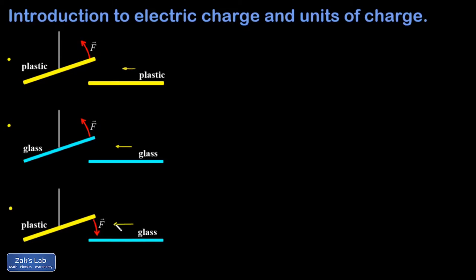So how do we explain this behavior? We explain it by saying these rods are being charged when we rub them with different materials. There are two different flavors of charge that we call plus and minus. Like charges repel each other — consistent with the first two pictures — and unlike charges attract each other, which explains the third picture.